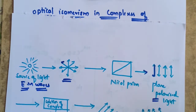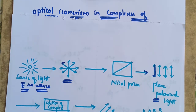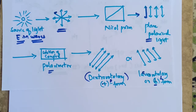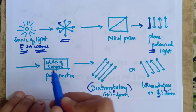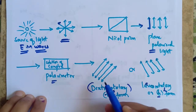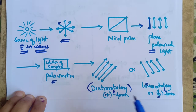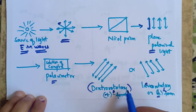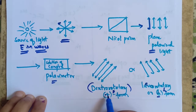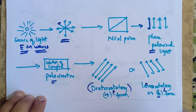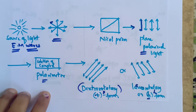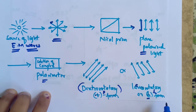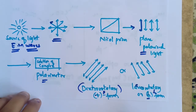It is the plane polarized light. Such type of light which vibrates in only one direction is called as plane polarized light. Here the solution of complex under study is taken in the polarimeter. If the solution of the complex rotates the plane of polarized light towards the right side or clockwise direction, it is called as dextrorotatory or D-form. It is indicated by a positive sign before its formula. And if the solution rotates the plane towards the left side or anticlockwise direction, it is called as levorotatory or L-form. It is indicated by a minus sign before its formula.